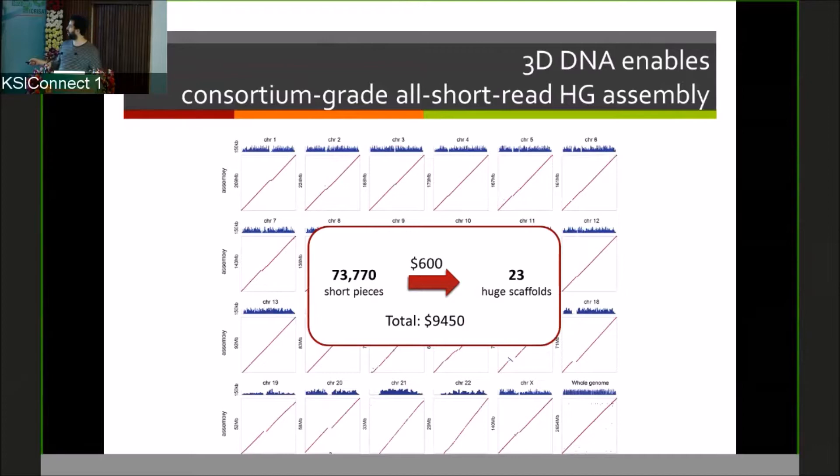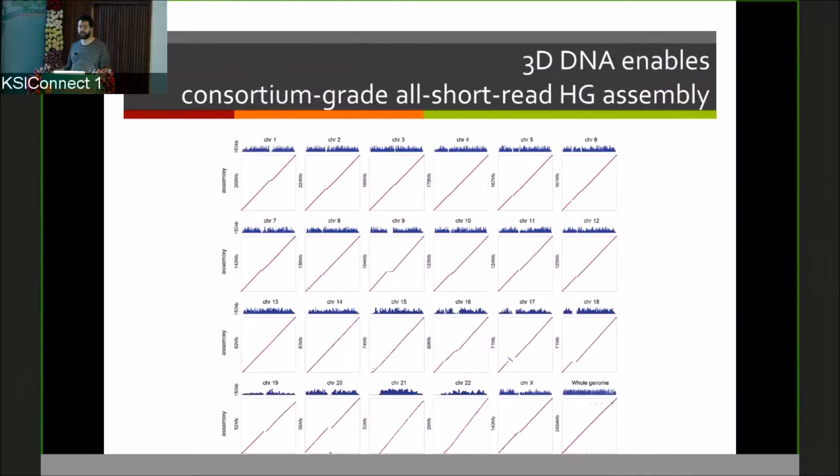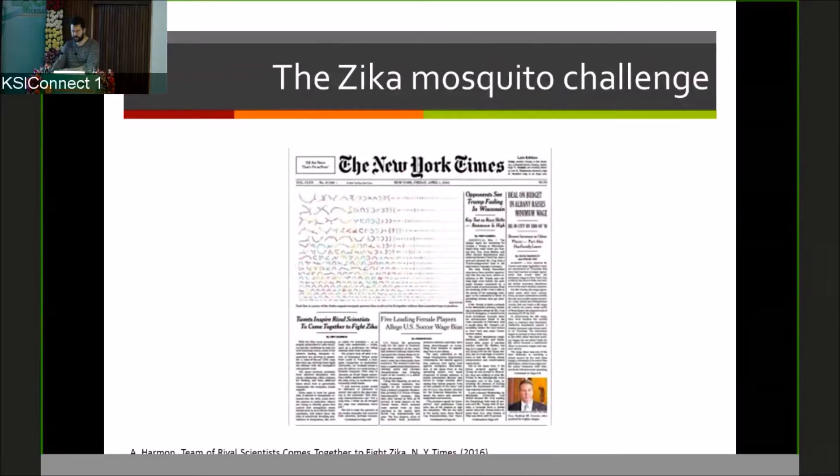In this particular case, I want to highlight that we actually started with about a hundred thousand short pieces in the genome. We only added six hundred dollars worth of 3D sequencing data, and we're able to produce the 23 huge scaffolds that were essentially perfect. This genome is as close to HG38, the current human reference, as the original draft genome published by the Human Genome Consortium was to the reference. That was a three billion dollar effort. This is something we can now do for about ten thousand dollars worth of sequencing and a lot of computational effort.